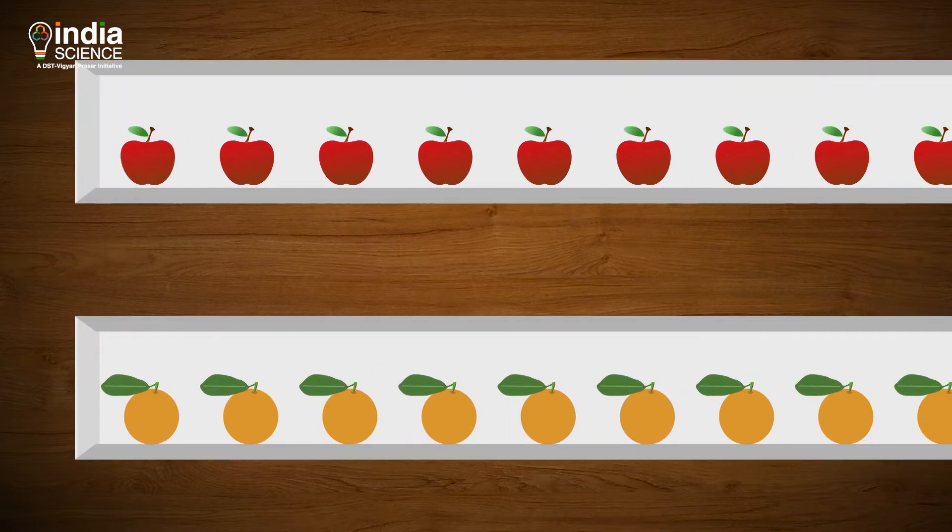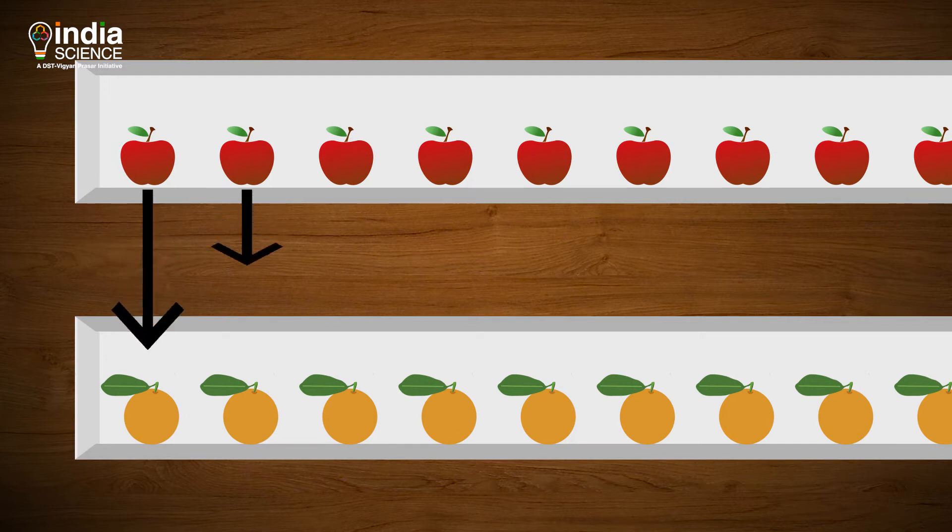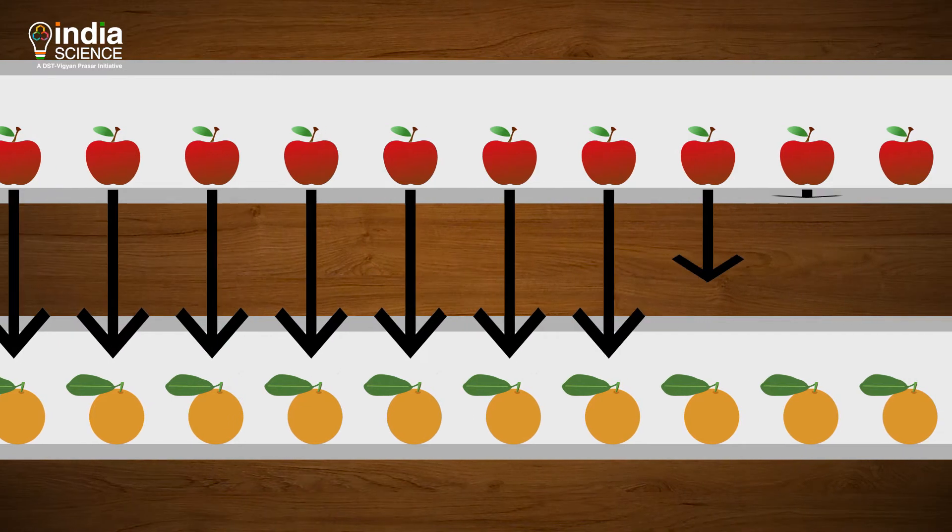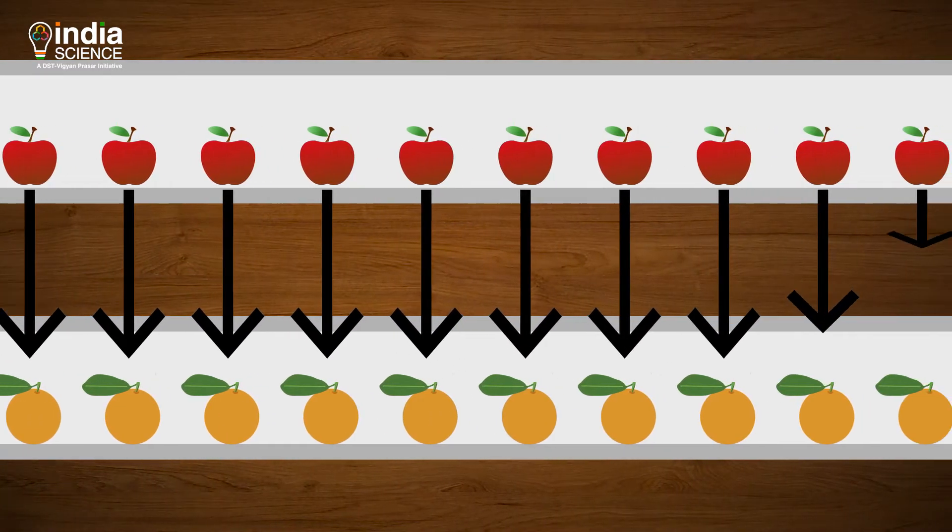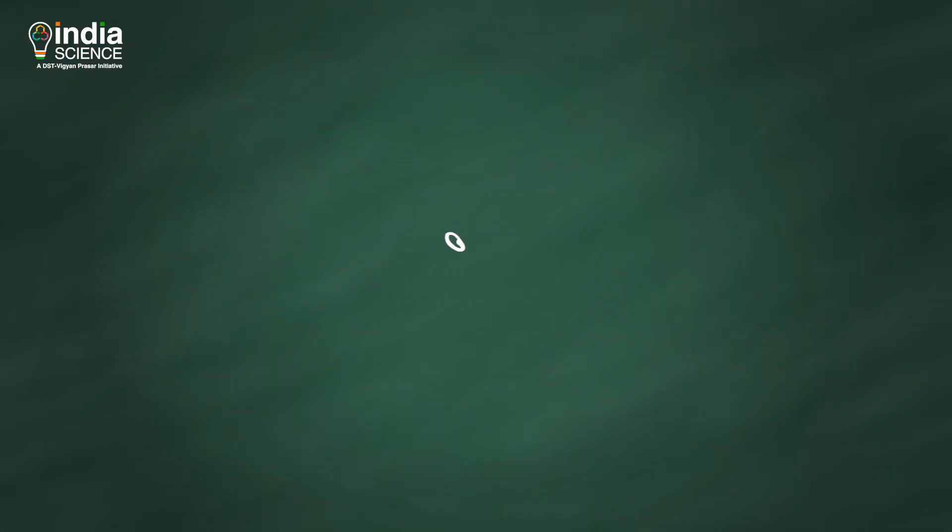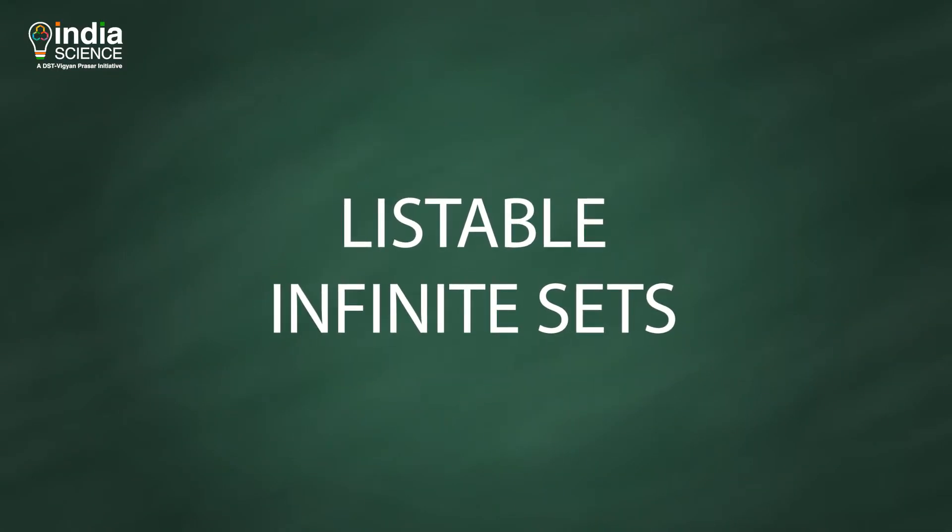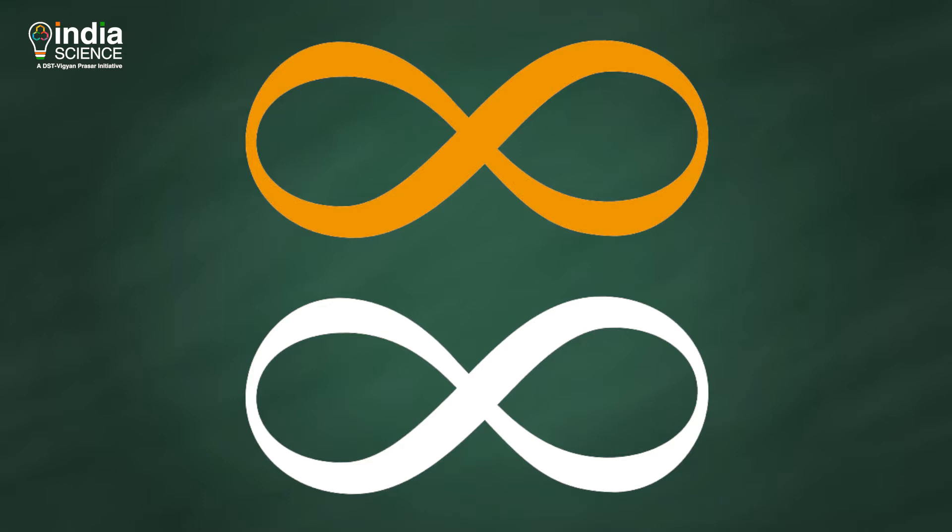Now, consider an infinite number of apples in a box A, obviously an infinite large box, and an infinite number of oranges in a box B. Now, we can again pair them up, but this time it will go on forever. These kinds of boxes or sets are called listable infinite sets, and this represents two equal infinities.